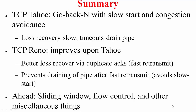To summarize: TCP Tahoe is the simplest version, based on go-back-N which includes slow start and congestion avoidance. The problem with TCP Tahoe is that loss recovery is slow and it drains the pipe during timeouts. Reno addresses these problems via fast retransmit — recovering losses via duplicate acknowledgements — and fast recovery, which prevents draining of the pipe. Ahead we will put everything in the context of the sliding window protocol and address flow control and other miscellaneous issues.